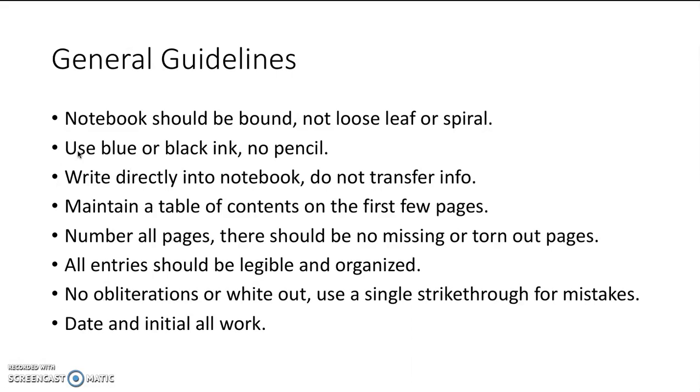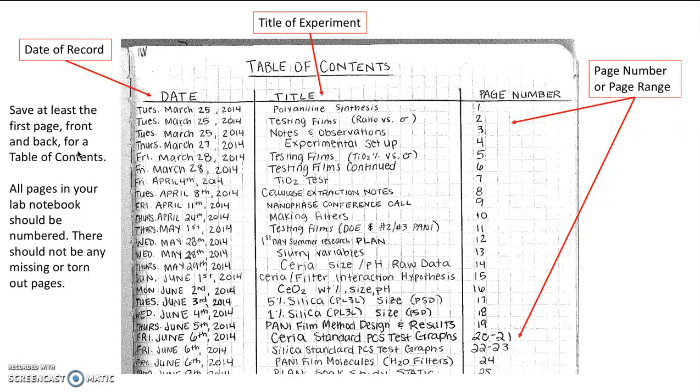So I can just show you some examples of these things. So first of all you can see here we have an example of a table of contents. We've got a date column, a title for what was happening that day, and a page number. These could be literally every single page or they can be a page range.